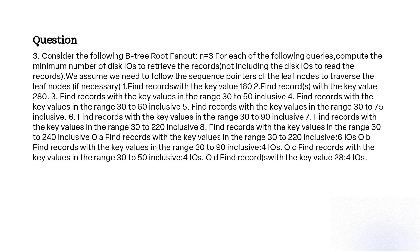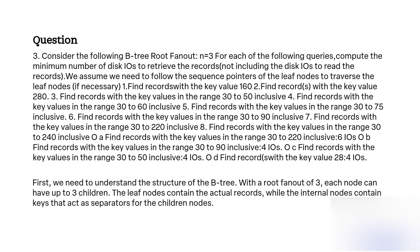The objective is to calculate the minimum number of disk I/Os required to retrieve records with specific key values or within specific key value ranges in a B-tree with a root fan-out of 3. First, we need to understand the structure of the B-minus tree. With a root fan-out of 3, each node can have up to 3 children. The leaf nodes contain the actual records, while the internal nodes contain keys that act as separators for the children nodes.